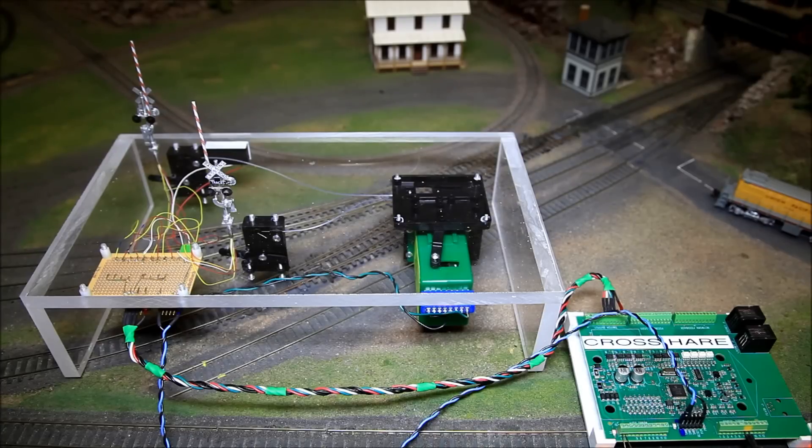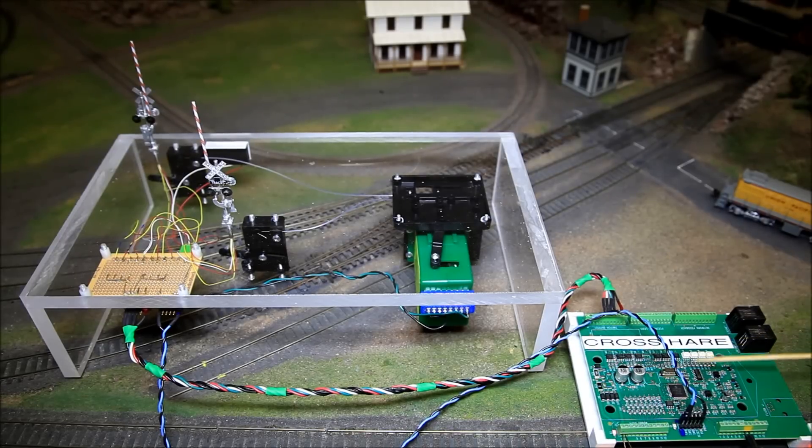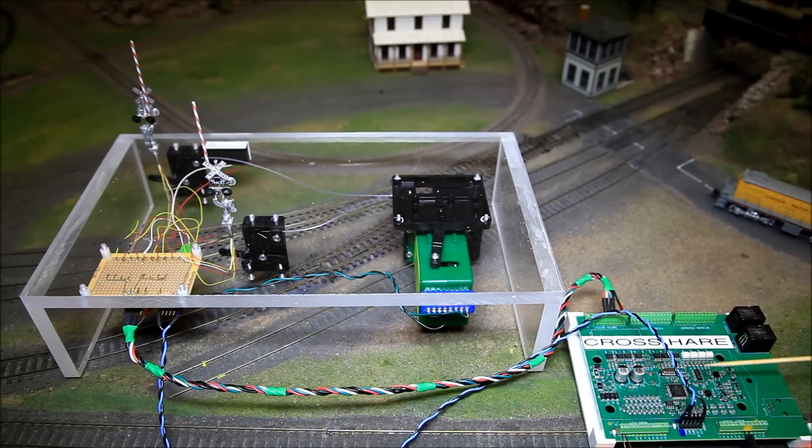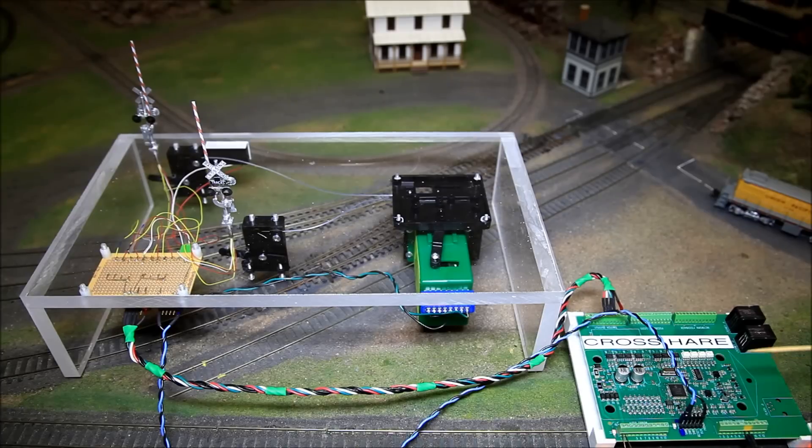This is the crosshair board, and it provides all of the control functions that you need to animate a grade crossing. It has inputs for sensors to pick up from the track.